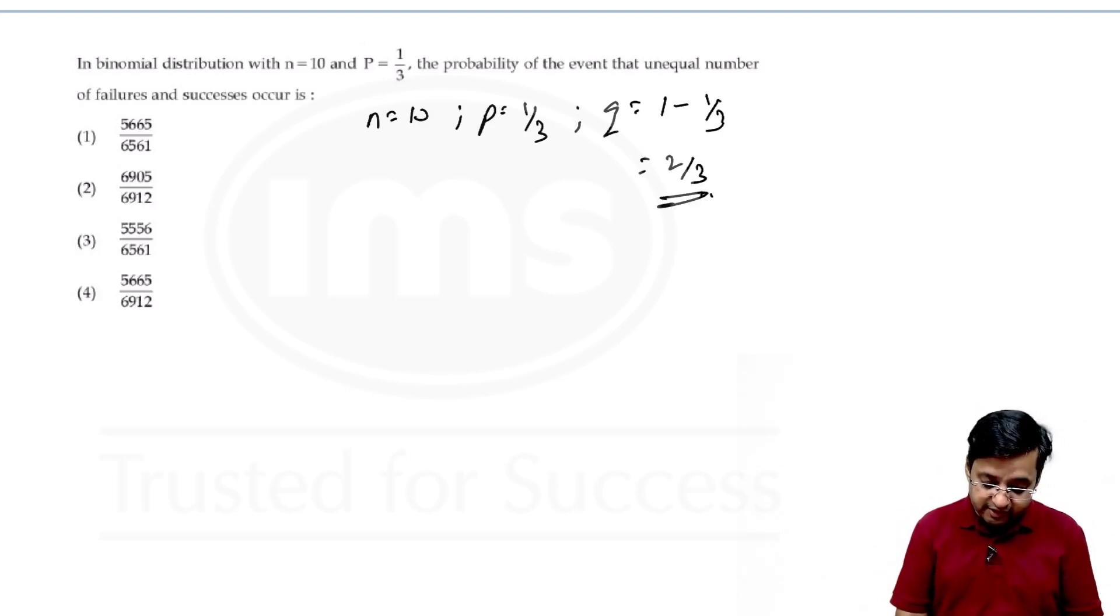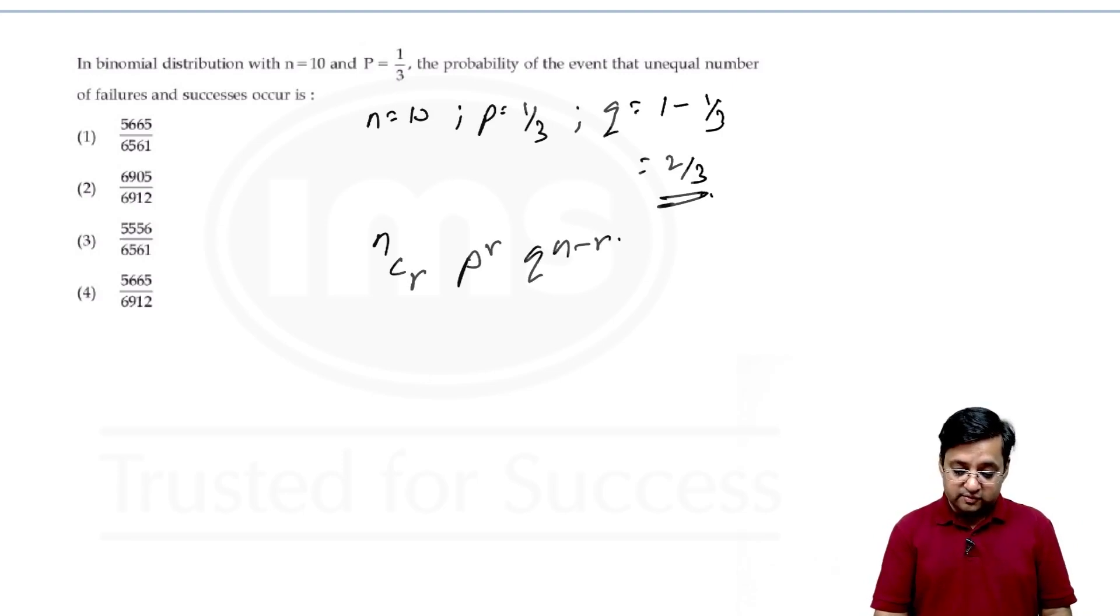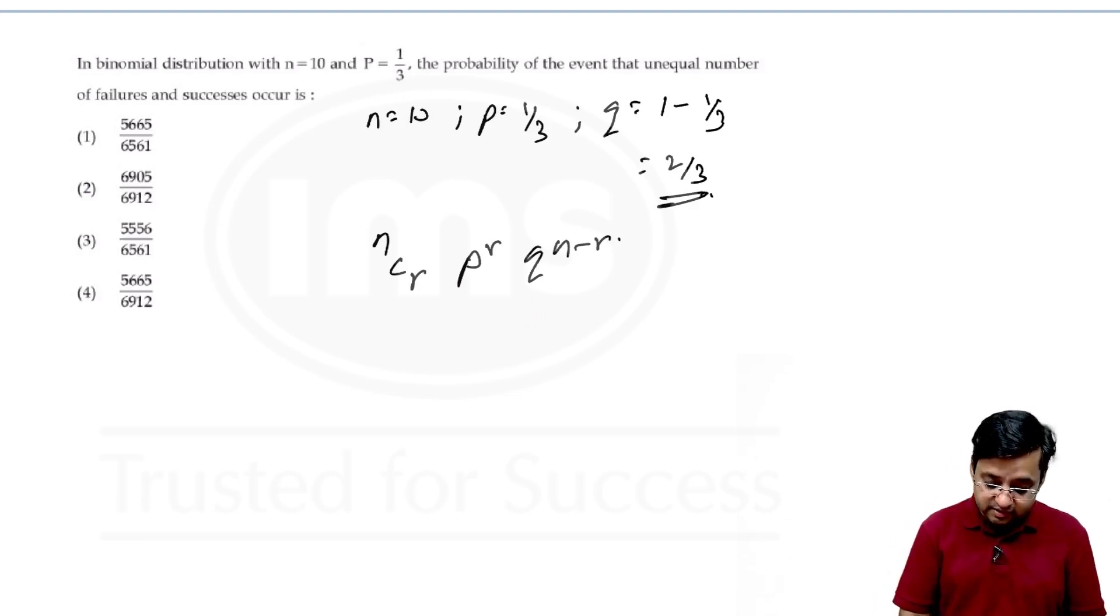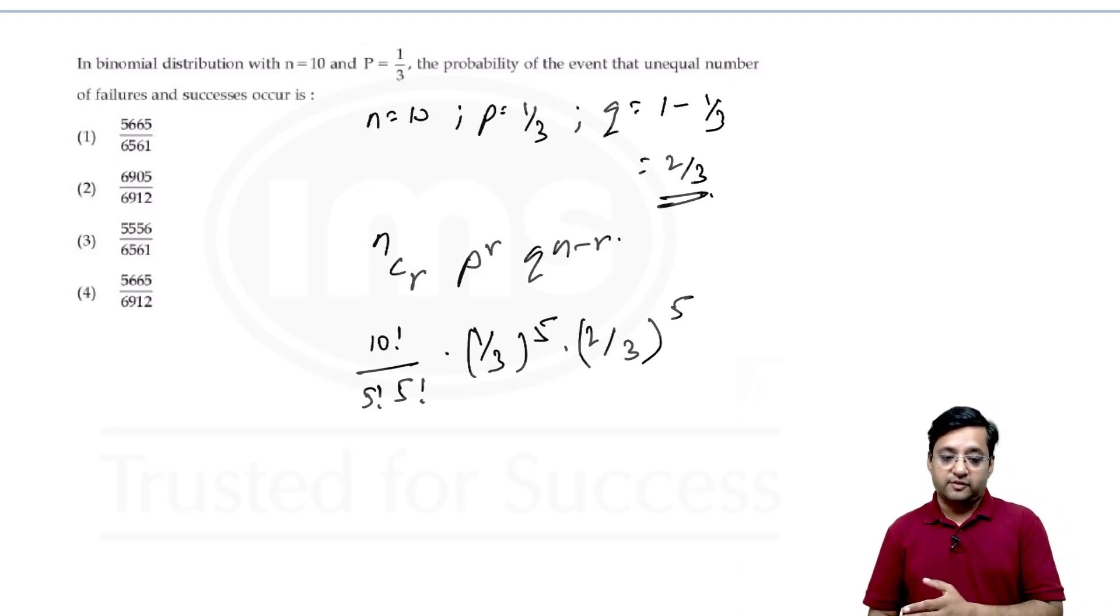So what is the formula for this first? It's nCr, p^r, q^(n-r). So n is the total number, r is the number of selections or total number of events, and p and q are success and failure. So if we apply this, this will become 10 factorial by 5 factorial 5 factorial into 1/3 to the power 5 into 2/3 to the power 5, that is 10 minus 5 will be 5.